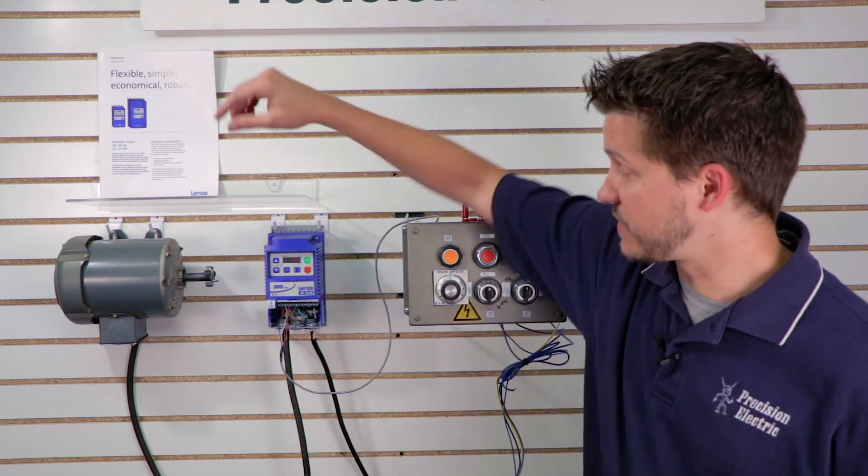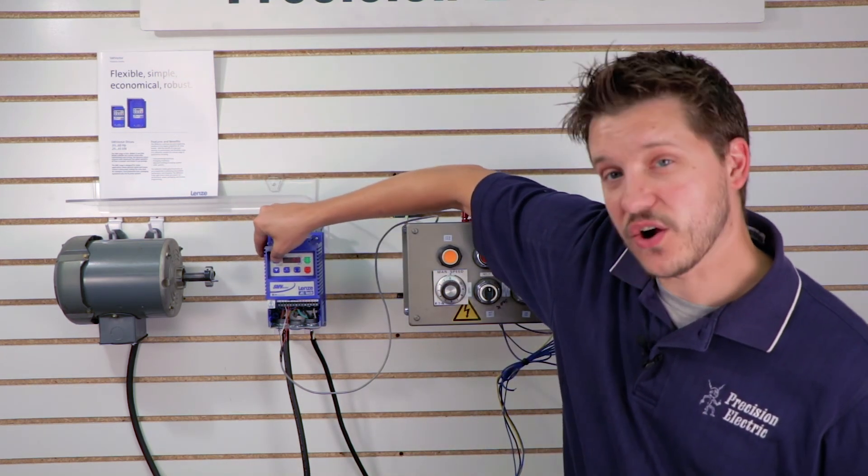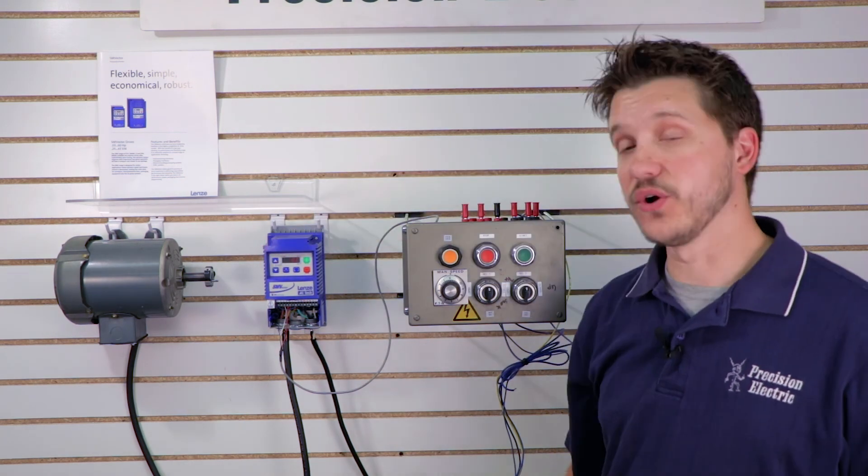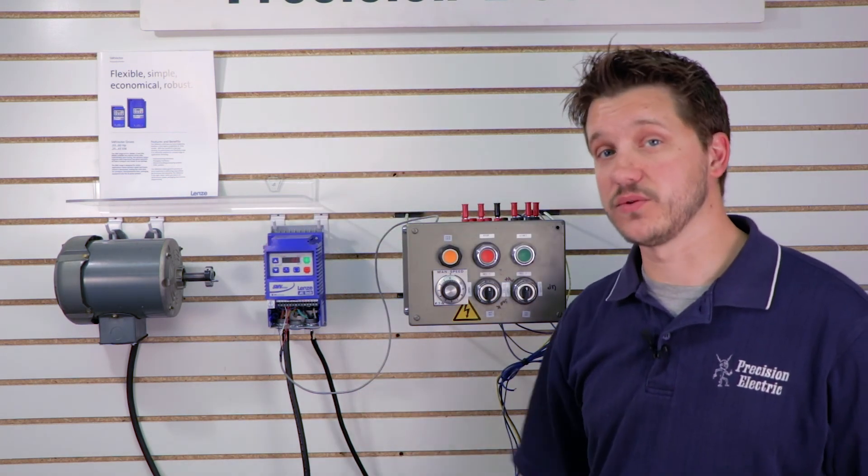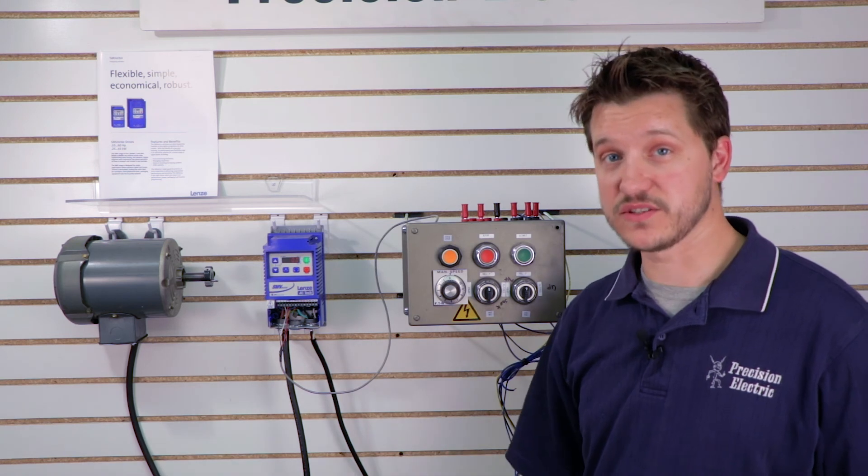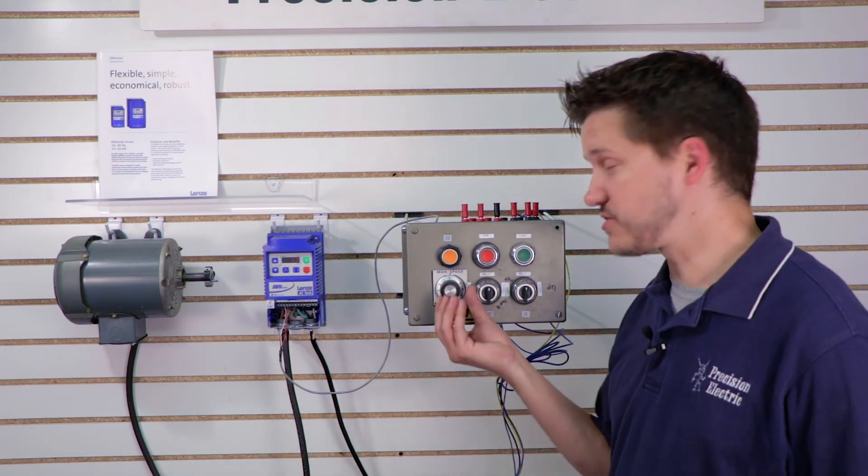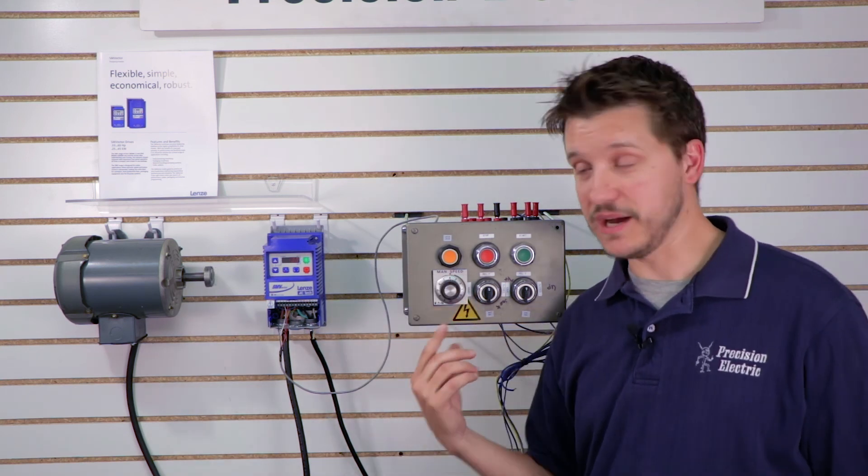But now if I try to use the arrows here to do my speed I get an ERR message which means error because it's no longer looking at the keypad in order to turn on my speed or turn up my speed. Now it's looking at the speed pot. So turning up my speed now is just a matter of turning the knob.